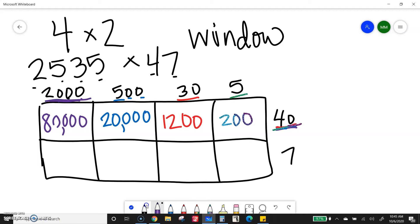So for the thousands, 2,000 times 7. 2 times 7 is 14, 3 zeros put on. 500 times 7, I get 5 times 7 is 35 with two zeros. 30 times 7. 3 times 7 is 21. Put a zero on. And then 5 times 7 is 35, and there are no zeros on that one.